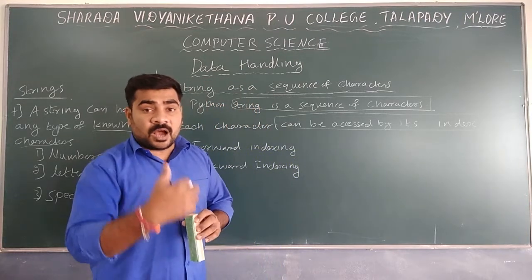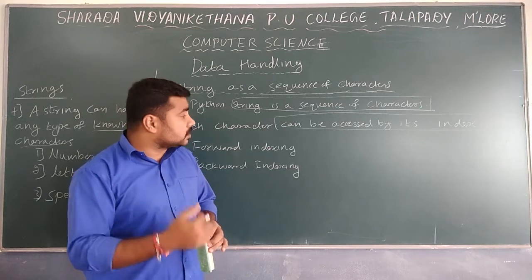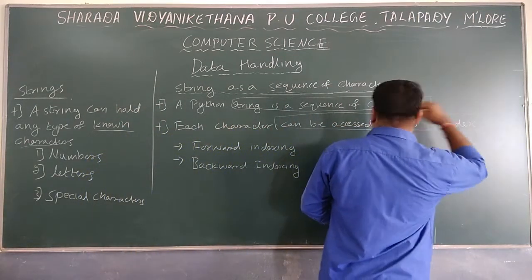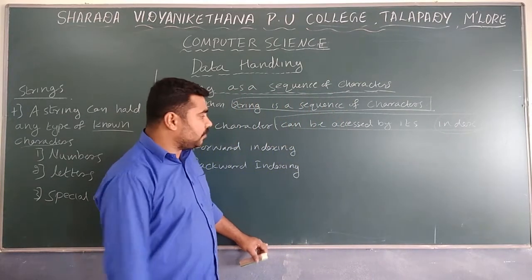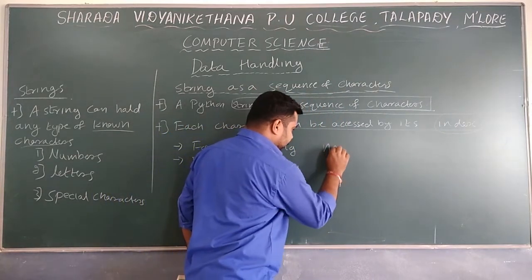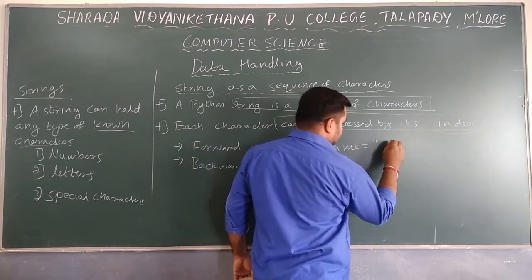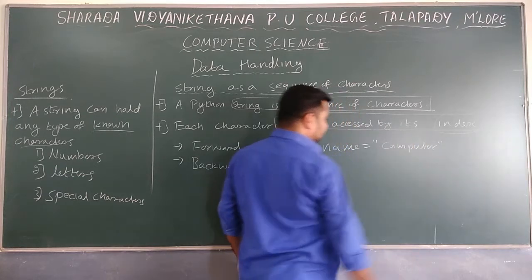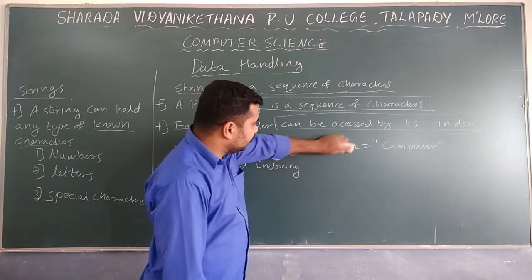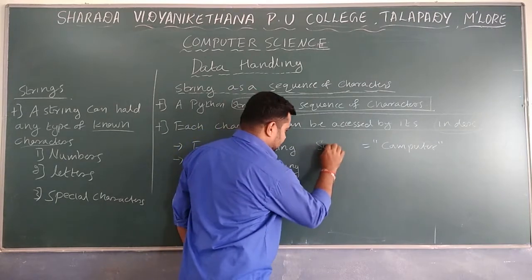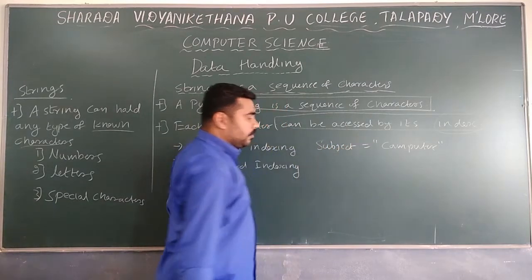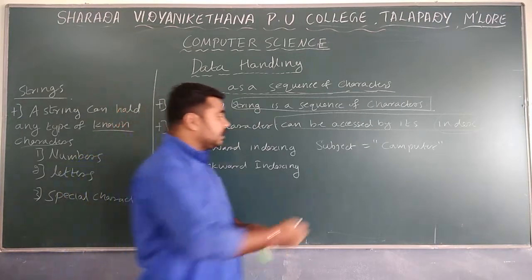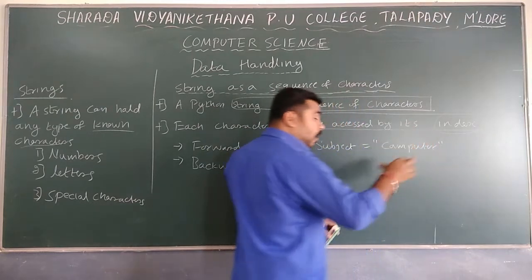Whenever a string is there, how can we access it? It can be accessed by the index. For example, if you assign name equal to 'computer' — or say subject equal to 'computer' — when you assign the string you can use a double quote or a single quote.